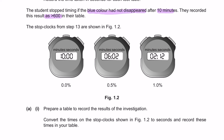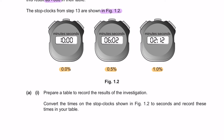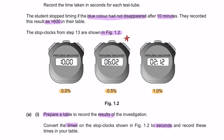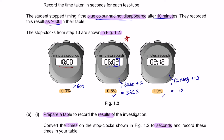Results recorded as more than 600 seconds are shown in figure 1.2 for 0%, 0.5%, and 1%. Question A, part 1: Prepare a table to record the results and convert the times on the stopwatch to seconds. The first result shows 10 minutes, recorded as more than 600 seconds. For 0.5%, it is 6 minutes and 2 seconds — that's 6 × 60 + 2 = 362 seconds. For 1%, it is 132 seconds.